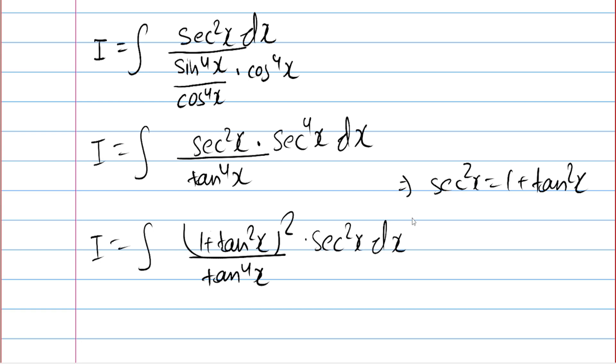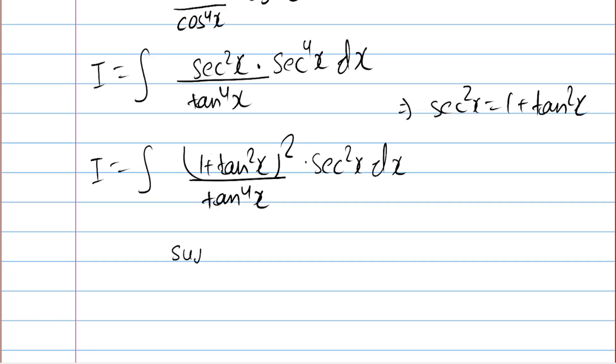Now I have converted everything in terms of tan except the sec square x. I don't need to because I will substitute tan x equal to t, and this sec square x dx will become dt.